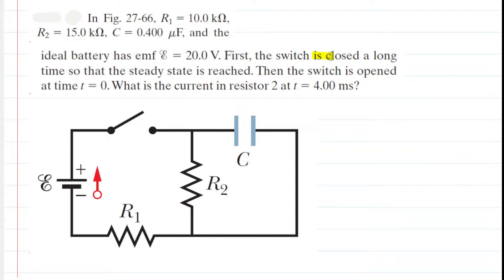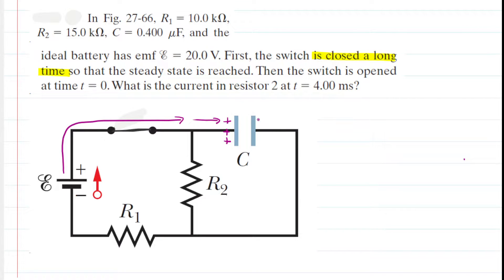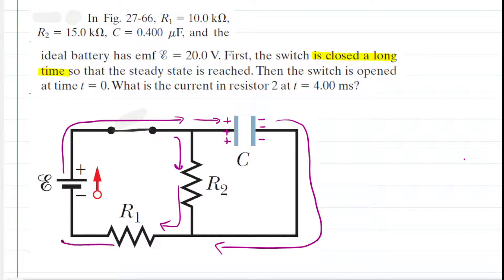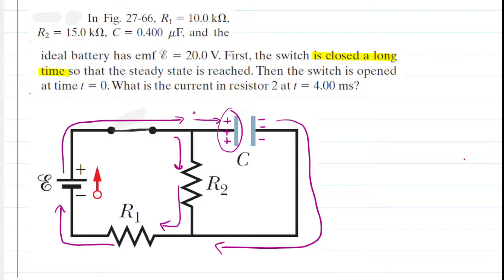We are told that first the switch is closed a long time, so we go ahead and close this switch. As soon as we close the switch, current begins to flow through the circuit, exiting the positive terminal of the battery. It reaches a junction and splits — some current deposits positive charges on one plate of the capacitor, causing the other plate to develop a negative charge. The rest of the current takes the other path through the junction. But since the switch is closed for a long time, the capacitor plates charge up to the extent that current can no longer flow through the right branch. The plate becomes positively charged enough that incoming current is repelled, and eventually stops flowing through that part of the circuit.